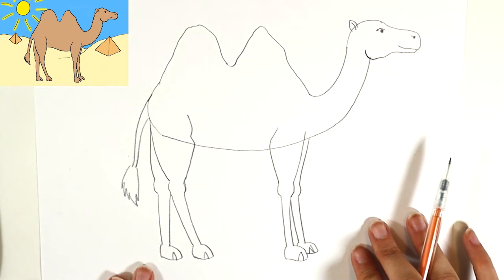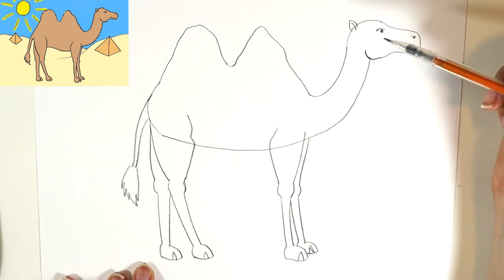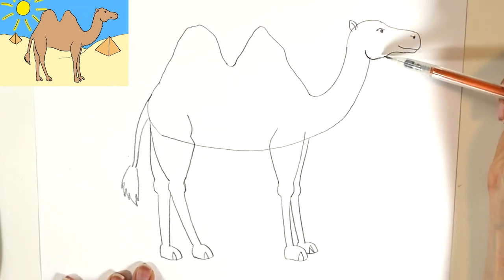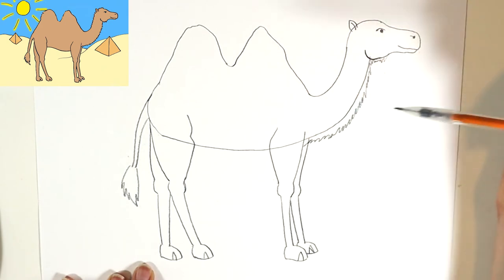Now you could stop here and be done. However, I'm gonna add a few extra details to my camel before I do my sharpie marker to trace over. Camels are pretty fluffy on their necks and their chins even, so if you want, you can go in and add some little kind of quick zigzags on the chin. I'm definitely gonna add some on the neck.